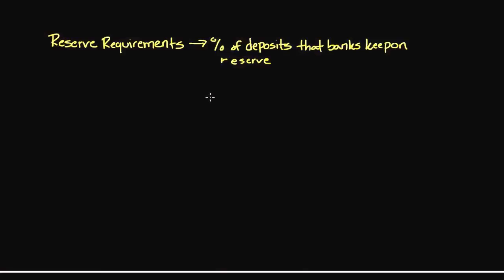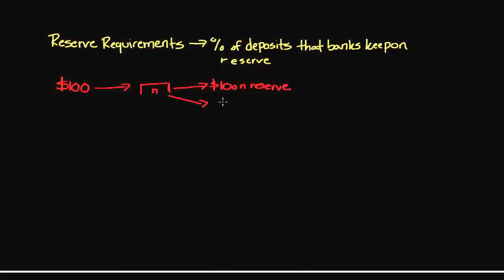Banks still create money by taking deposits and making loans. For example, if you were to go into your bank and deposit $100, the bank is going to do two things. First, they're going to hold some money on reserve. So assuming a 10% reserve requirement, the bank is going to put $10 on reserve and then take the other $90 and create a loan. They'll obviously probably add that to additional funds from other deposits and create a larger loan.